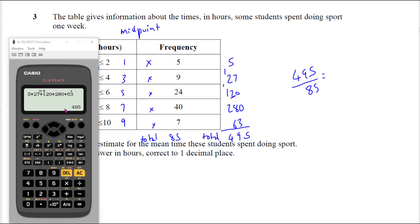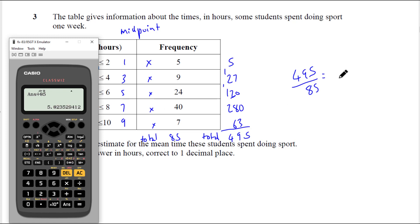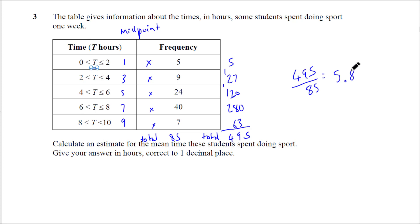Just double-checking some figures on my calculator to make sure my total is correct. You'd be surprised the amount of students who make small mental errors in exams due to mental fatigue. A quick tip: sometimes you might get a frequency of zero, and I've seen grade 9 students do 1 times 0 equals 1, which is incorrect — 1 times 0 is 0. So be very careful when you multiply anything by 0. Dividing 495 by 85 gives 99 over 17. It's to one decimal place — that dot means recurring, so just press it one more time. That was 5.8, and that's the answer.